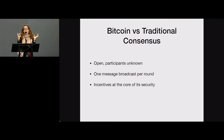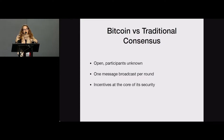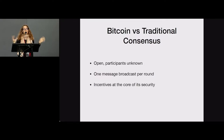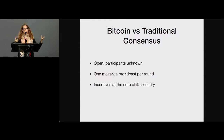How is this achieved? It's mainly due to an economic argument: it costs a lot of money to create a block because of proof of work. So really, for Bitcoin, incentives are at the core of its security. Whereas for traditional consensus protocols, there's no such thing as incentives — we just assume participants are here to participate and there's no need to incentivize them.